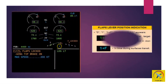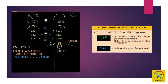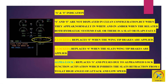The flaps lever position indication appears in green when the target position is reached; position 0 is not displayed in clean configuration. The flaps lever position indication appears in blue during surface transit. S and F indications are not displayed in clean configuration, but when they appear, they are normally in white, turning amber when the related both hydraulic systems fail or there is a slat or flaps fault. Flaps locked replaces F when the wingtip brakes are applied.